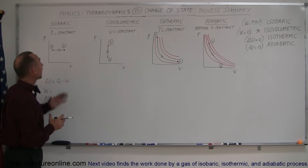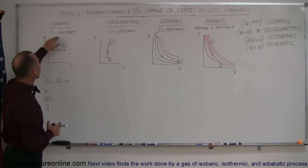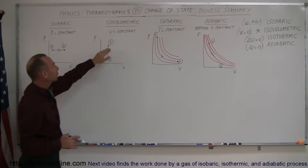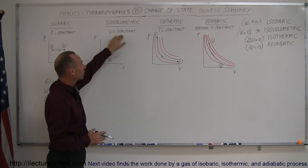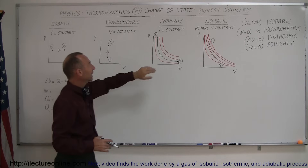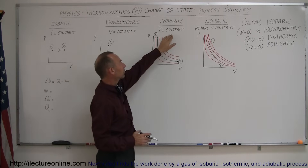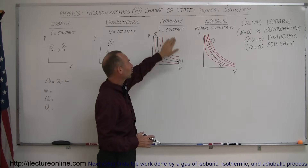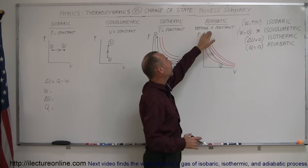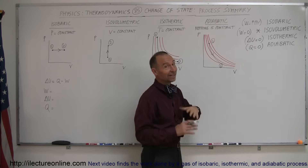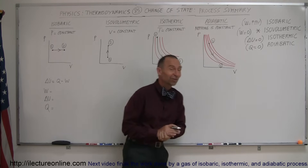In the isobaric process, pressure is constant. In the isovolumetric process, volume is constant. In the isothermic process, temperature is constant. And in the adiabatic process, nothing is constant.